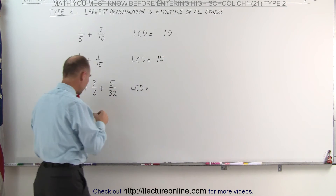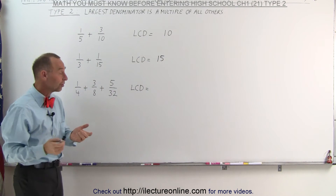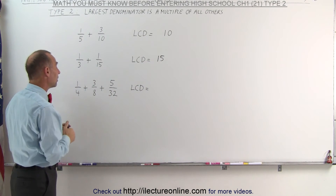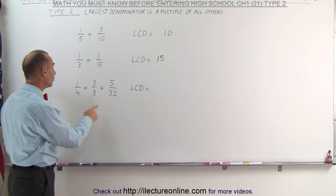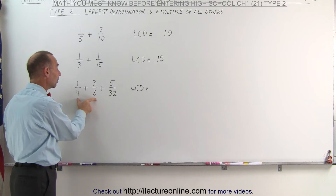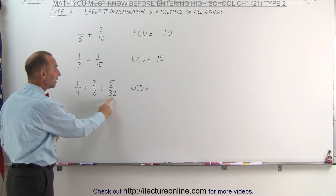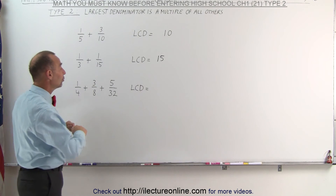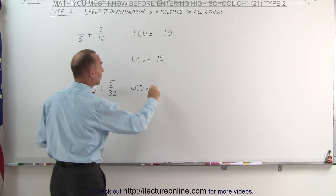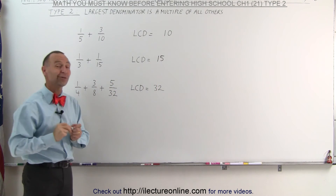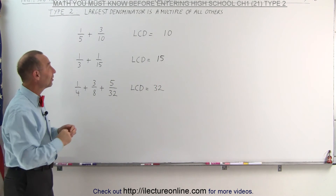And here, even when we have 3 or more fractions, again look at the largest denominator and notice that both 4 and 8 — the other two denominators — fit evenly into the largest one. Which means that 32 also becomes the lowest common denominator.